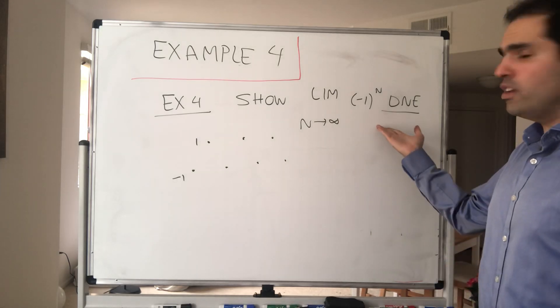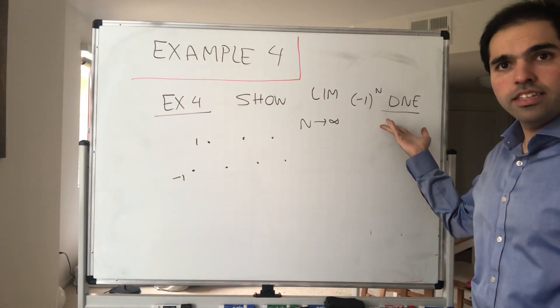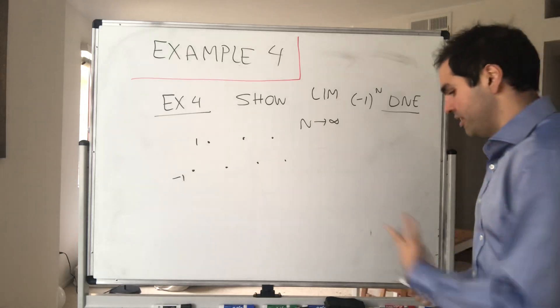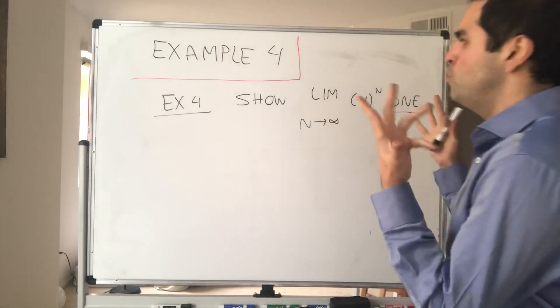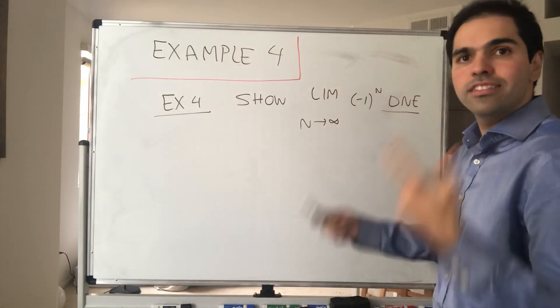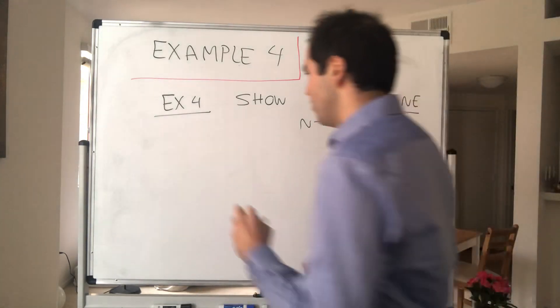And the way you show that the limit doesn't exist is basically by contradiction. So in other words, you should suppose that the limit exists and find some sort of contradiction.